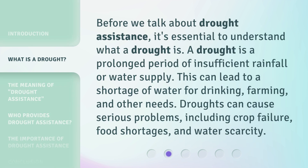Before we talk about drought assistance, it's essential to understand what a drought is. A drought is a prolonged period of insufficient rainfall or water supply. This can lead to a shortage of water for drinking, farming, and other needs. Droughts can cause serious problems, including crop failure, food shortages, and water scarcity.